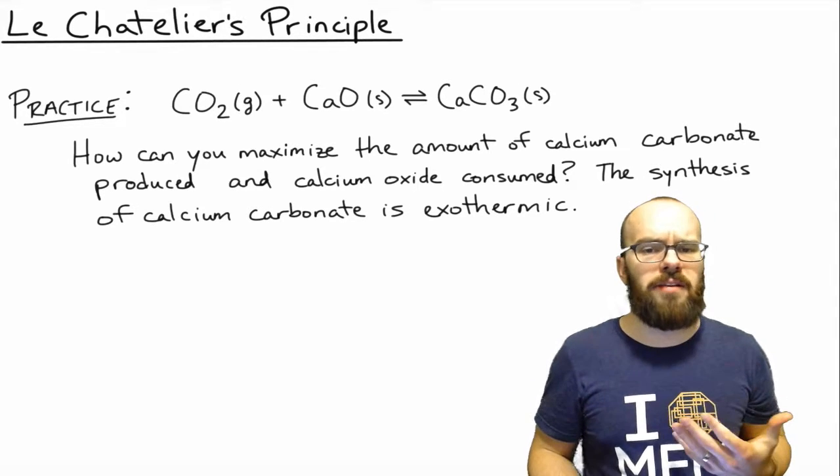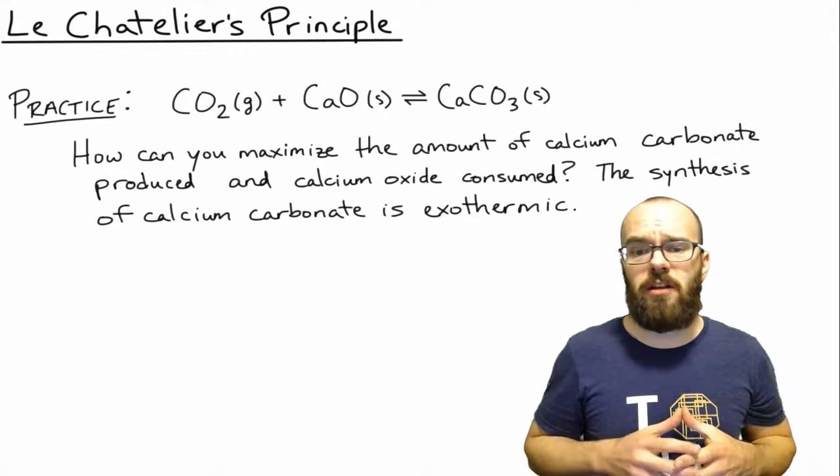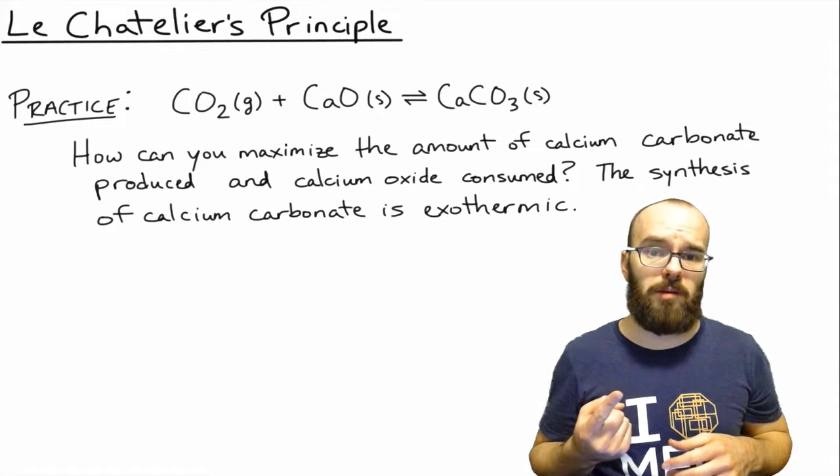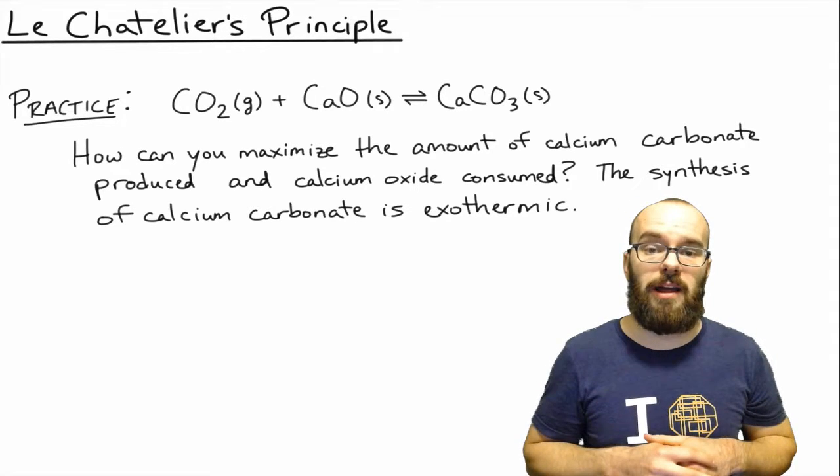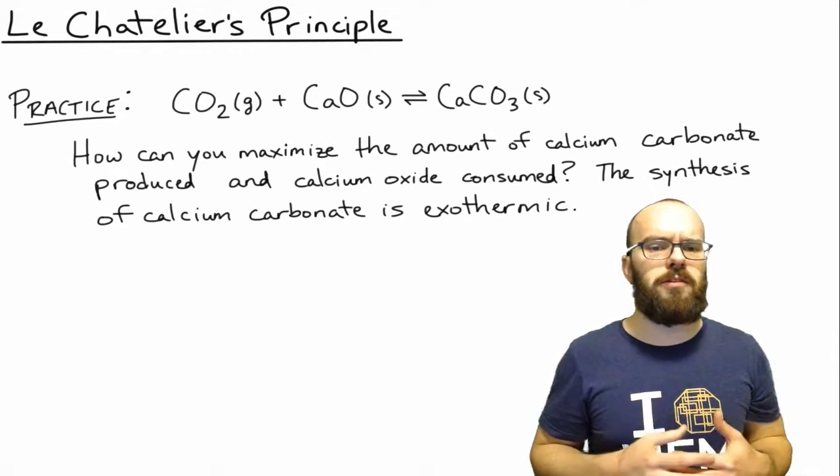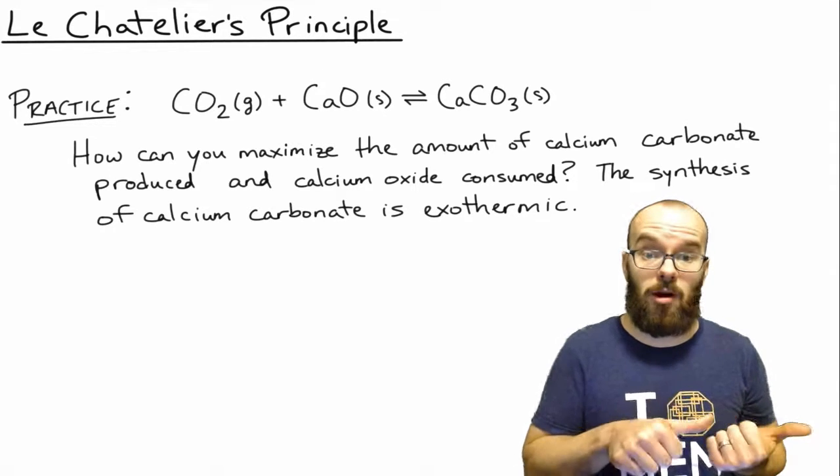Well, first of all, concentrations. If you look at these three, there's only one concentration that's going to affect our equilibrium, because we only have one thing that's not a solid, and that's going to be the carbon dioxide. So what would you need to do in order to shift this reaction toward calcium carbonate?